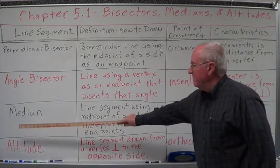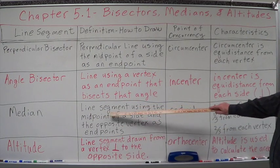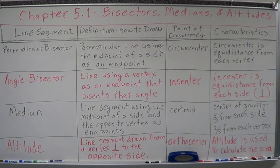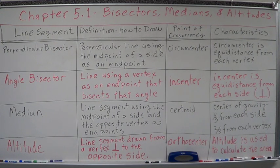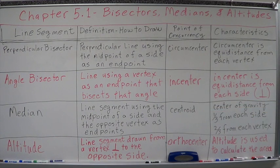Next is the median — a line segment using the midpoint of a side and the opposite vertex as end points. It's the only one that tells you where both end points are: connect the vertex to the opposite side's midpoint. They're going to meet at the centroid, which is the center of gravity — one-third from each side and two-thirds from each vertex.